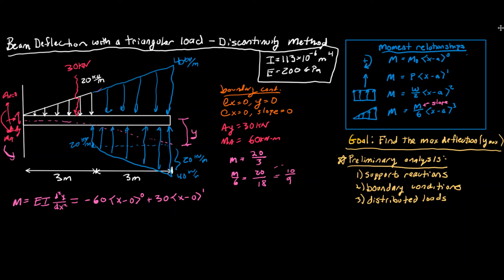When we do this triangle distributed load, we write minus 10 over nine times ⟨x minus zero⟩ to the third power. Now we need to add back the terms at the bottom. We split this up into a rectangle and a triangle, so I'll do the rectangle first. That's going to be w over two times ⟨x minus a⟩ squared. Our w is 20, so it's plus 20 over two times ⟨x minus three⟩ squared because this distributed load starts at x equals three. And the triangle term with the same slope gives plus 10 over nine times ⟨x minus three⟩ to the third power. That's our full moment equation.